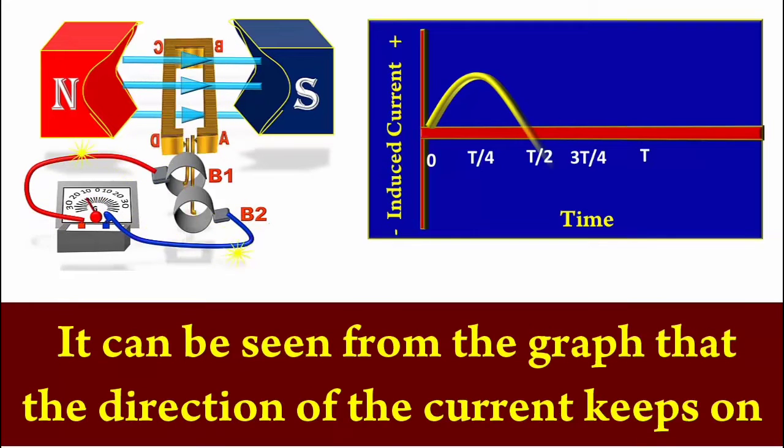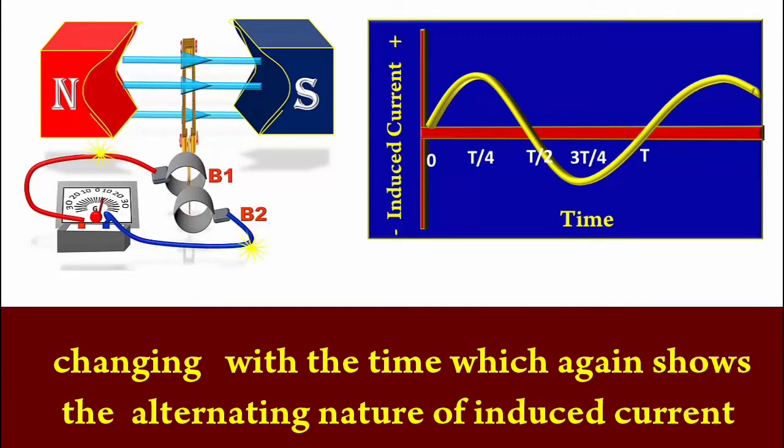It can be seen from the graph that the direction of the current keeps on changing with time, which again shows the alternating nature of induced current.